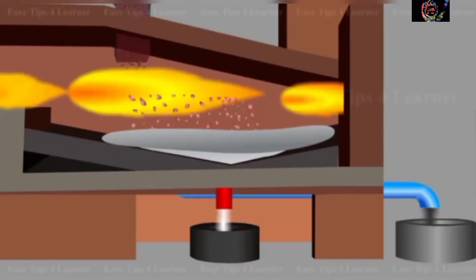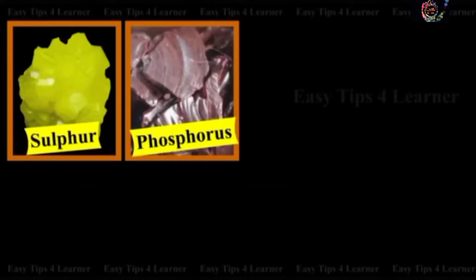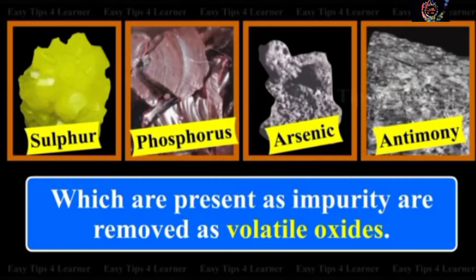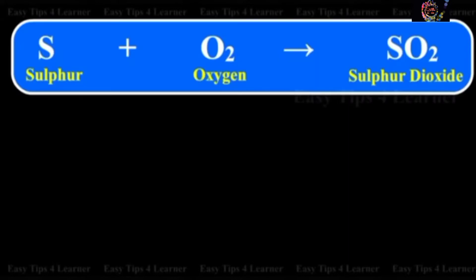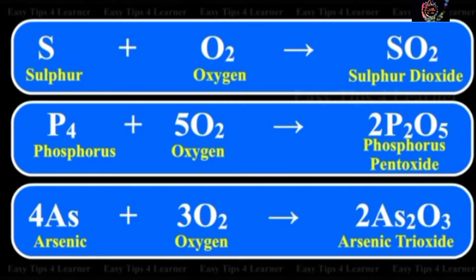The second step is roasting. The concentrated ore is heated strongly in a reverberatory furnace in excess of air. During roasting, moisture is removed and volatile impurities are removed. Sulfur, phosphorus, arsenic, and antimony present as impurities are removed as volatile oxides: sulfur plus oxygen gives sulfur dioxide, phosphorus plus oxygen gives phosphorus pentoxide, arsenic plus oxygen gives arsenic trioxide.